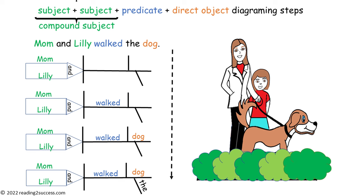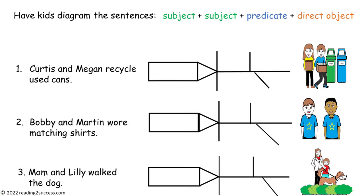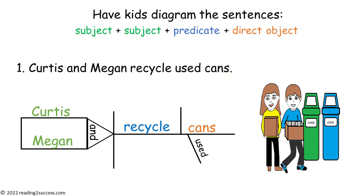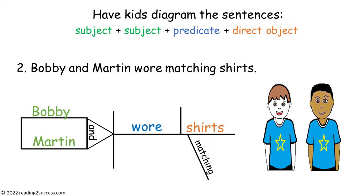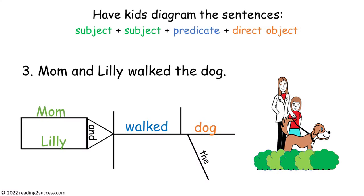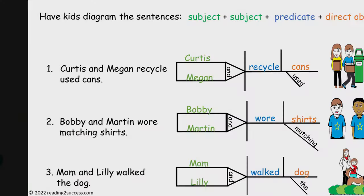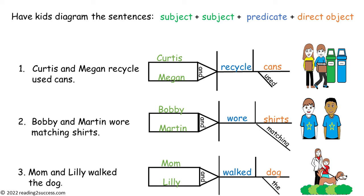This is the compound subject plus predicate and direct object diagramming steps we just completed. Now have kids diagram the sentences for compound subject, predicate, and direct object — the first sentence, second sentence, and third sentence. Here is the completed example.